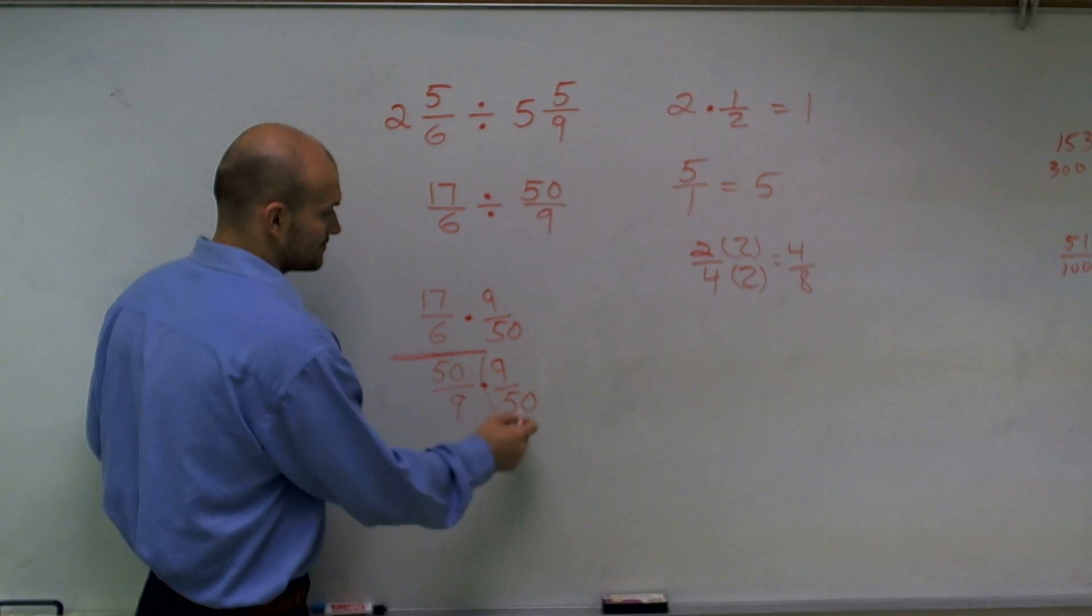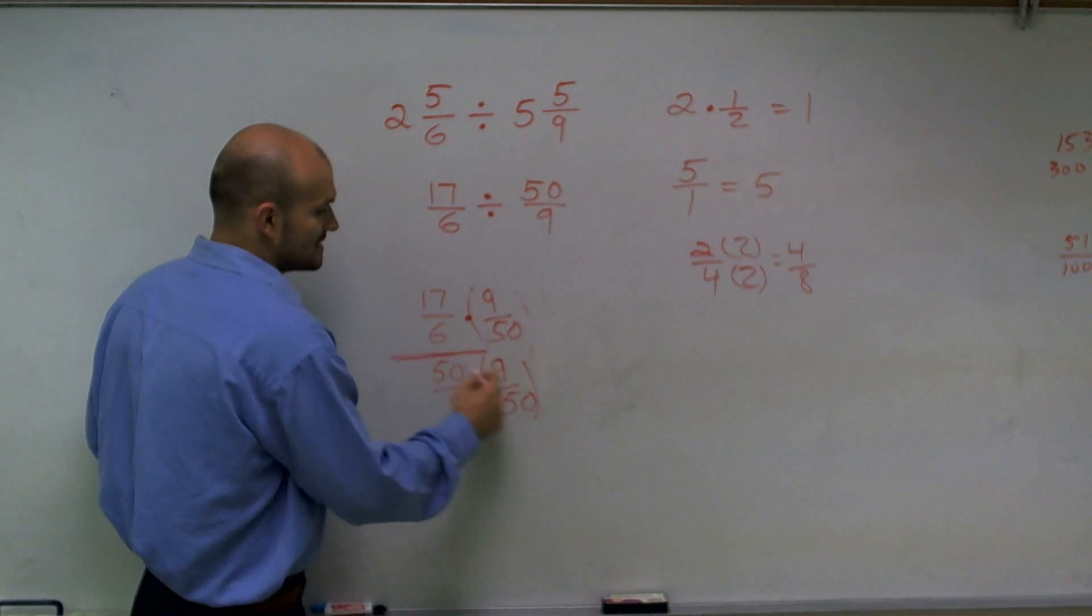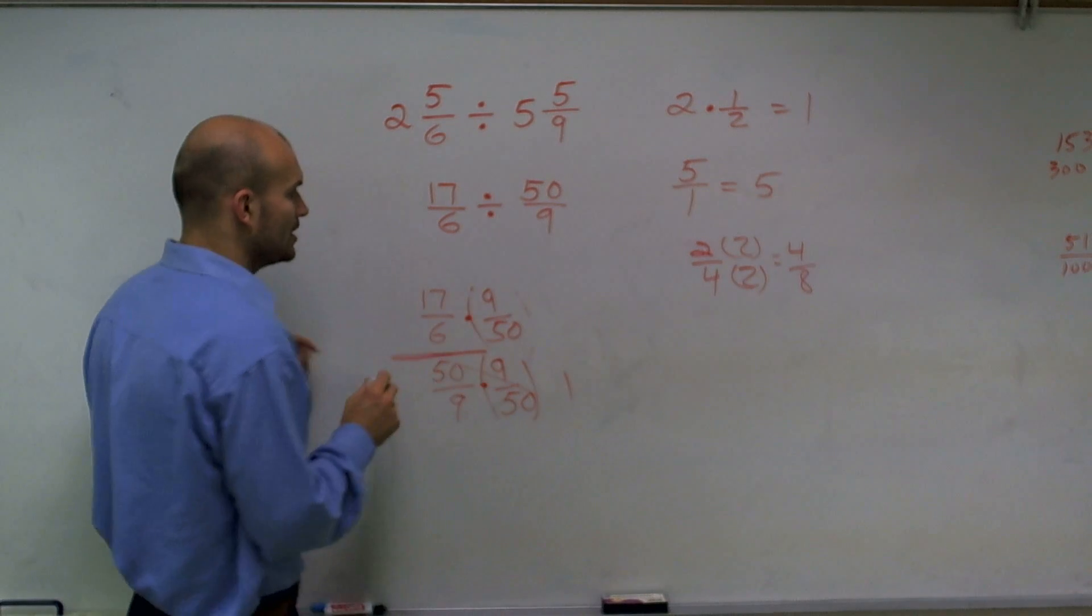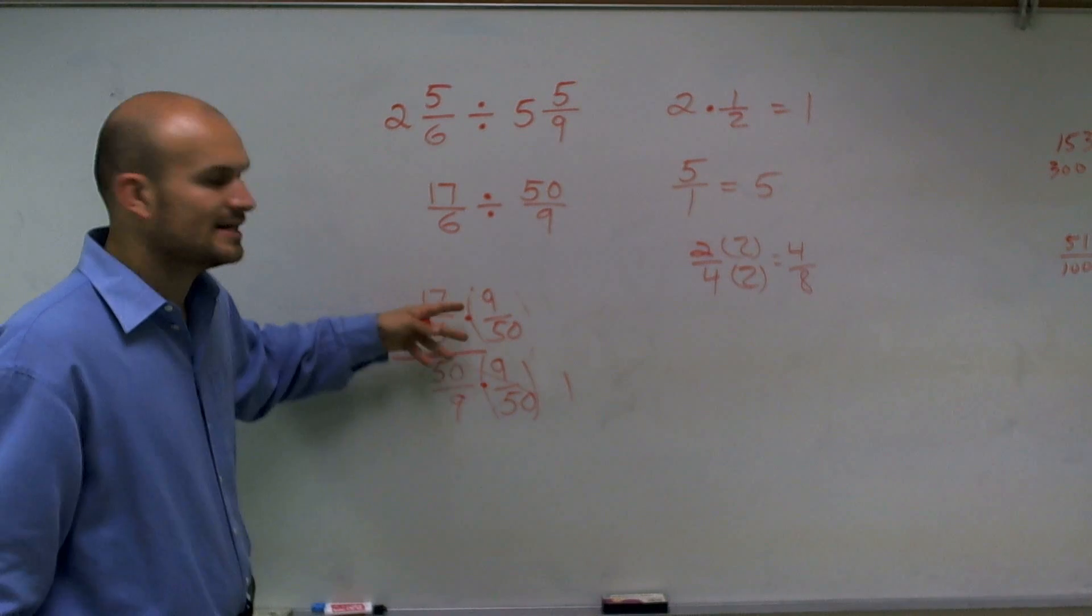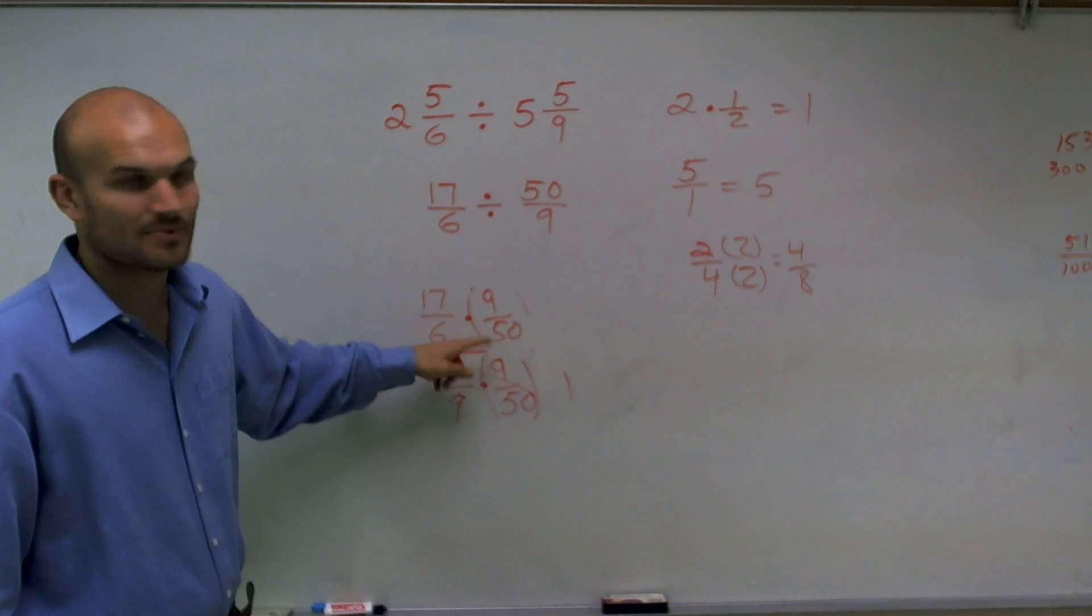When doing that, this now cancels to 1. And here what I've done is I've just now turned a division problem into a multiplication problem.